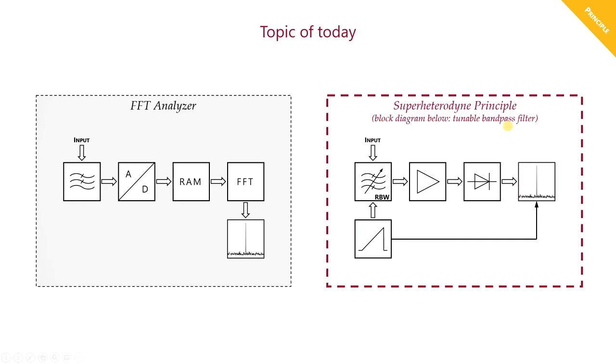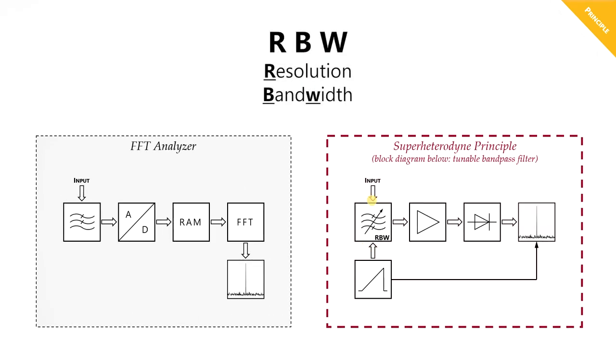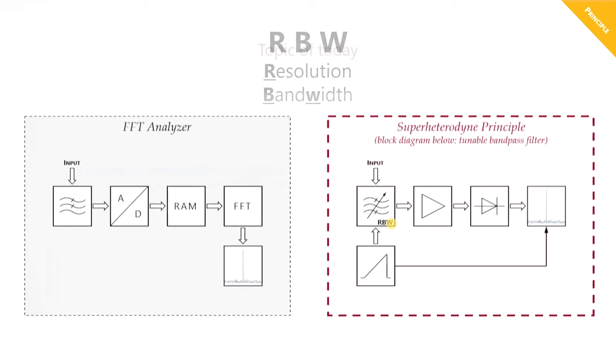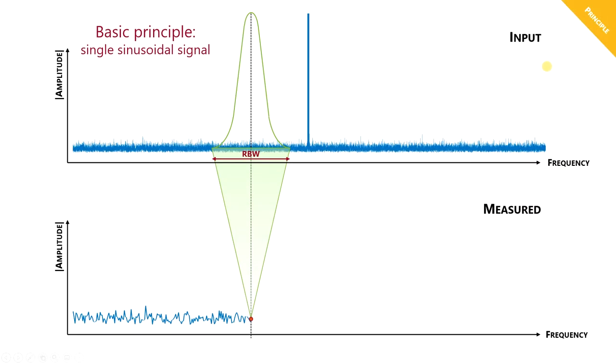Before that, I want to start with a tunable bandpass filter, which is shown in this block diagram here. The basic idea is quite simple. You have a bandpass filter, where the bandwidth is called resolution bandwidth, abbreviated as RBW. Let us assume that the EMI receiver input port is connected to a signal generator. All the power of the signal that is located within that filter bandwidth gets integrated and will be represented as one point on the EMI receiver's display.